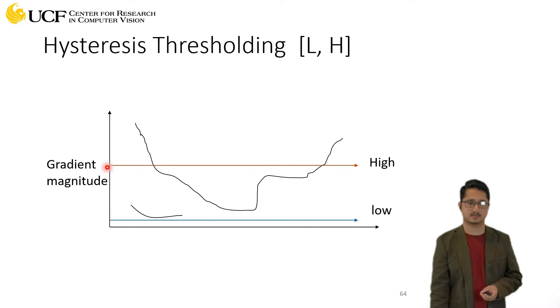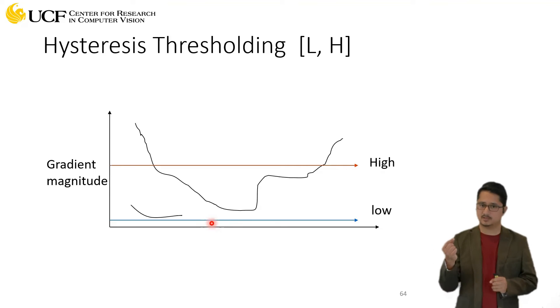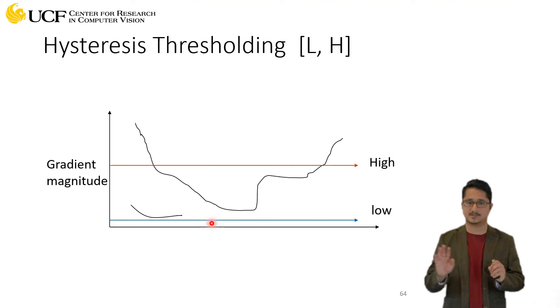The higher threshold is somewhere around this line. Earlier when you had just one threshold, anything above it is an edge, anything below is not. But this is slightly different - there are three steps. First, you look at the lower threshold, and any pixel gradient magnitude lower than this is not an edge and is completely ignored. Then you look at the higher threshold.